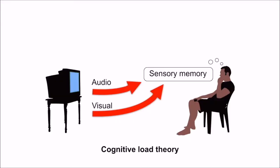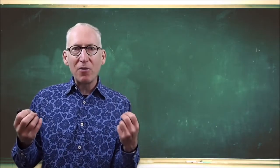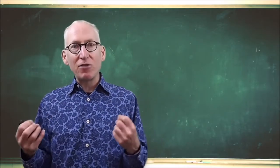As information comes into the sensory memory, we apply the processes of attention and selection. Some of this is conscious. We do it by choice. And some of it happens automatically as a function of the brain.